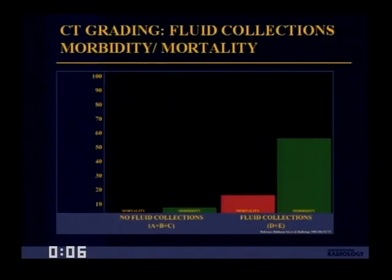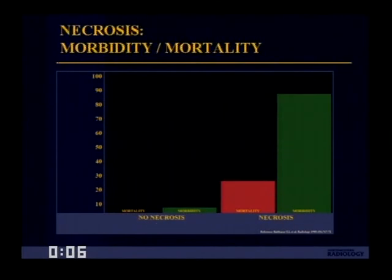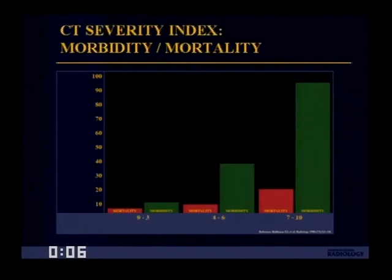If there are no fluid collections, mortality and morbidity are relatively low. As the number of fluid collections increases, mortality and morbidity do increase. Similarly, when there is no necrosis, morbidity and mortality are extremely low, but the presence of necrosis increases them significantly. Although now surgeons and radiologists are better at detecting necrosis, and patients are treated more rapidly, decreasing this morbidity and mortality. The severity index shows a similar pattern: as severity increases, morbidity and mortality increase.